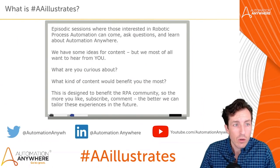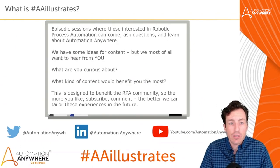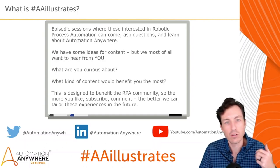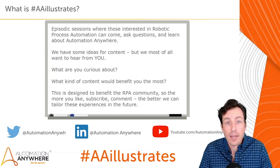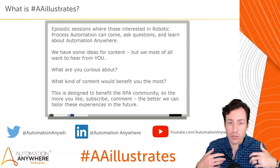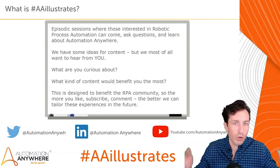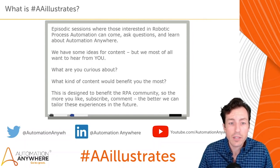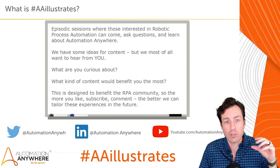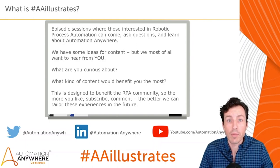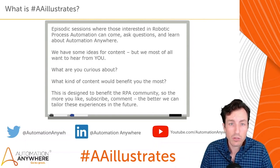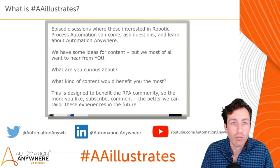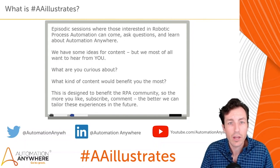AA Illustrates is an episodic series where those interested in robotic process automation can come and ask questions, have questions answered, and learn more about Automation Anywhere. This content is designed for your benefit. If there's stuff you want to learn that we haven't covered, put it in the chat, in the comments, or send us a note on any of our social channels. This specific session came about as a result of a survey we did on LinkedIn.